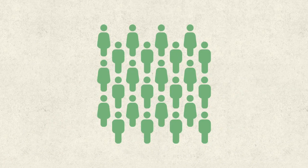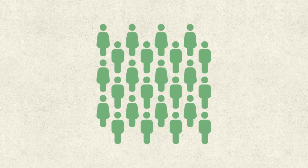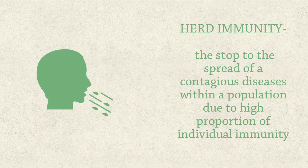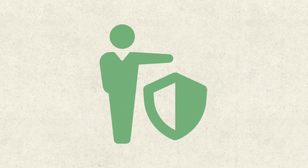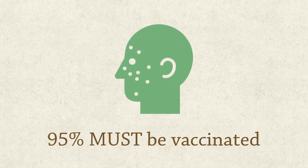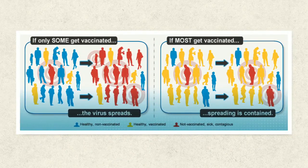It is important to have immunity as it is a defense system. Vaccines help protect communities, not just individuals. Herd immunity helps protect everyone. It works with a high percentage of individuals who are immune to a disease, which helps prevent the spread of the disease. Herd immunity helps protect infants, elderly people, and those with weakened immune systems. In measles, 95% of the community must be vaccinated in order for herd immunity to work. If only some get vaccinated, the virus spreads, but if most get vaccinated, the spreading is contained.